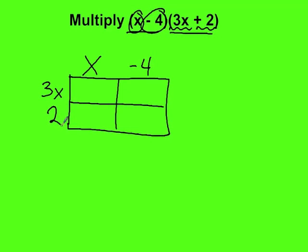If you like using lattice multiplication or similar methods, this may work well for you. Now we just need to multiply. x times 3x—there's no numbers to multiply by, or 3 times 1 would be 3, and x times x is x squared.